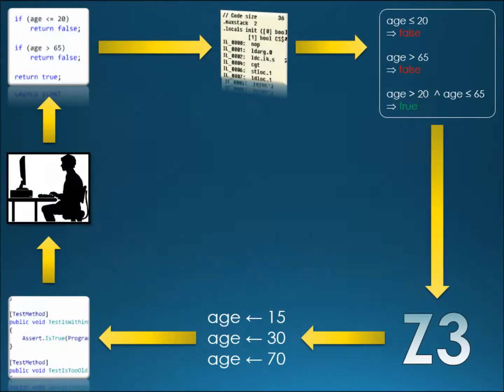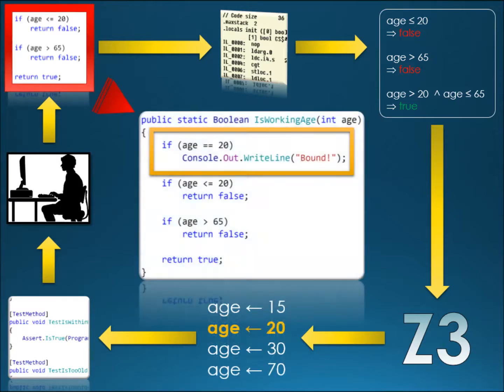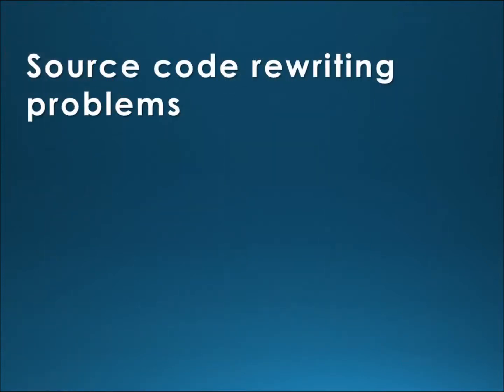One of the approaches already tried out by others is to automatically modify the source code to force the DSE engine to cover the boundary cases. Here you can see an example of such a modification. While this is an artificial example, actual practice is very similar to what you see here.